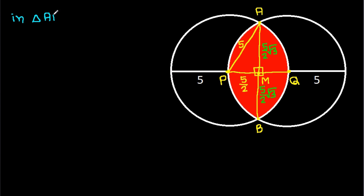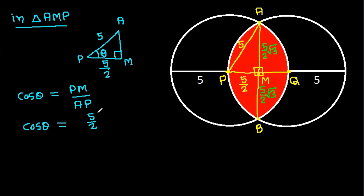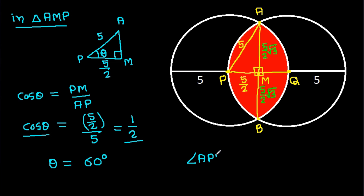Now in triangle AMP, this angle is 90 degrees, PM is 5/2, and AP is 5. Suppose this angle is theta. Then cos(theta) = PM/AP = (5/2)/5 = 1/2. That means theta = 60 degrees. And angle APM will be equal to angle BPM, both equal to 60 degrees by symmetry.